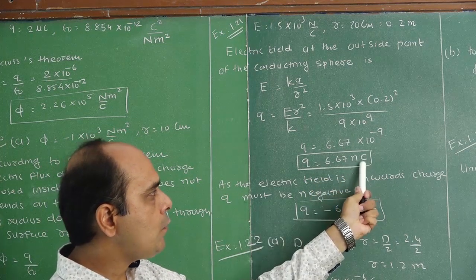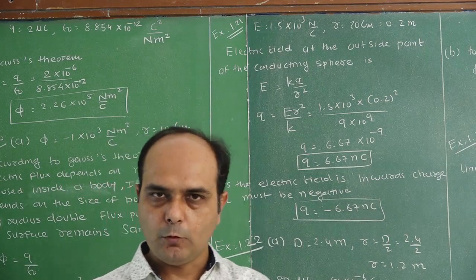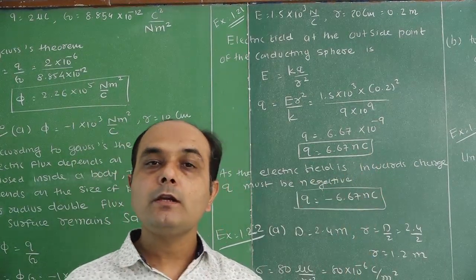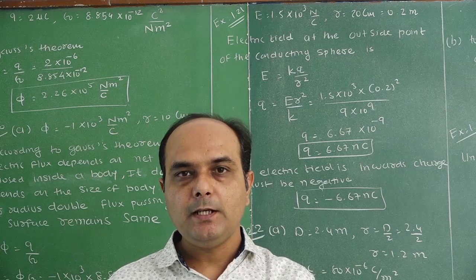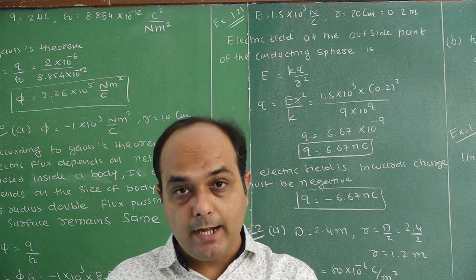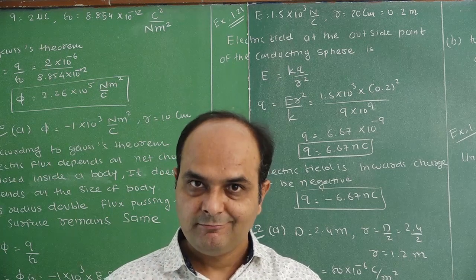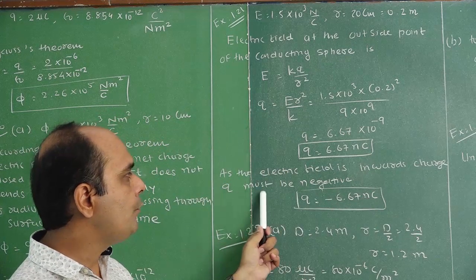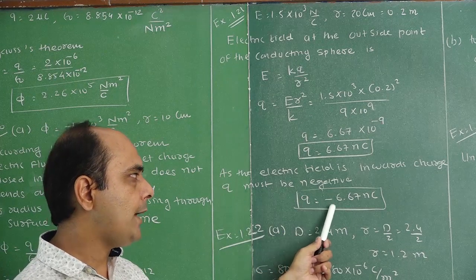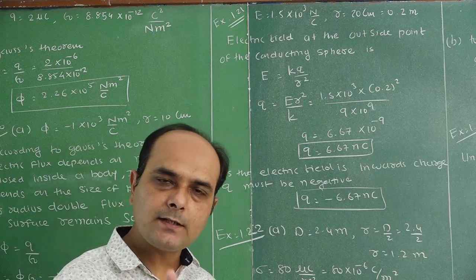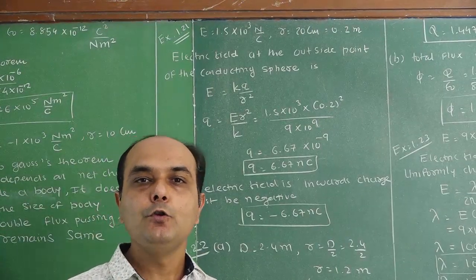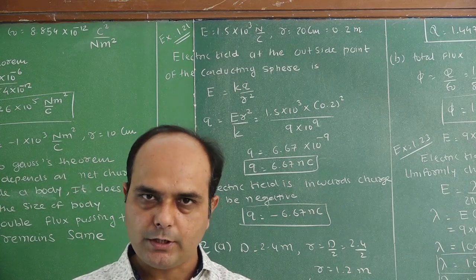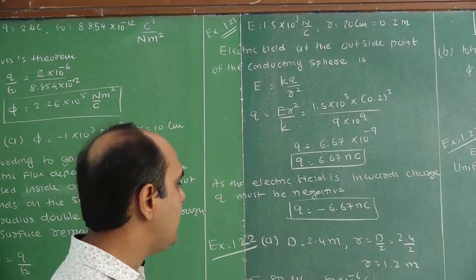10 to the minus 9 means nanocoulombs. The amount of charge on the surface of the sphere is 6.67 nanocoulombs. Since the question states the electric field is in the inward direction, the sphere is negatively charged. Therefore charge q must be negative: q equals minus 6.67 nanocoulombs, with the negative sign due to the inward electric field. If the electric field were outward, it would be a positive sign — positive charge. Example number 21 is completed.